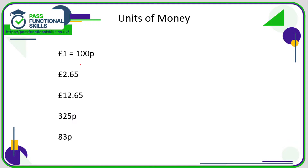Let's take a look at units of money. Hopefully you all know that one pound is the same as 100 pence. So to convert pounds into pence, all you're doing is multiplying by 100. And when going from pence to pounds, you do the opposite — you divide by 100.